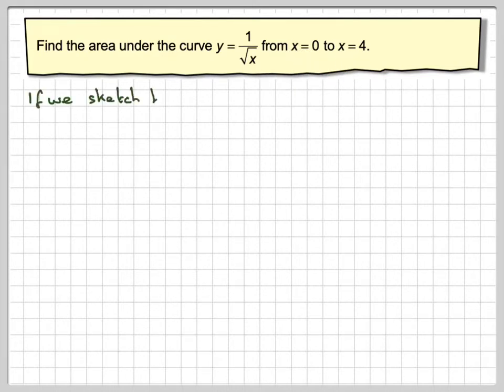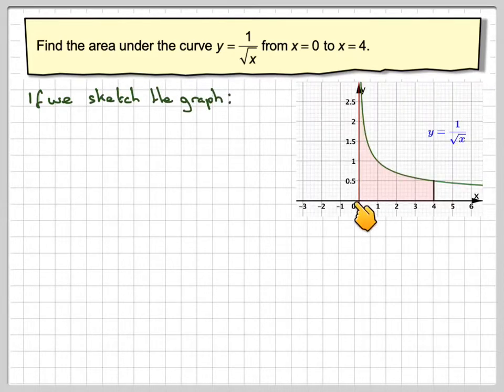So if we sketch the graph, it looks like this, from x equals 0 to 4.